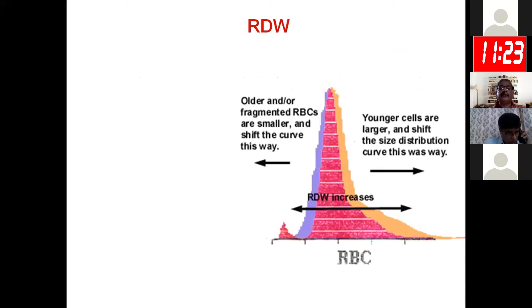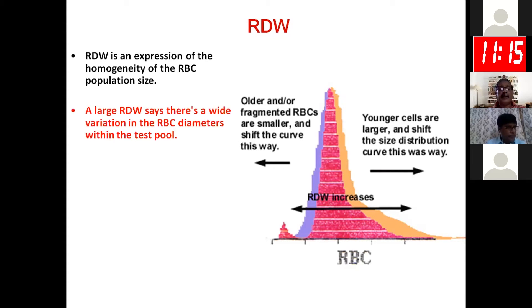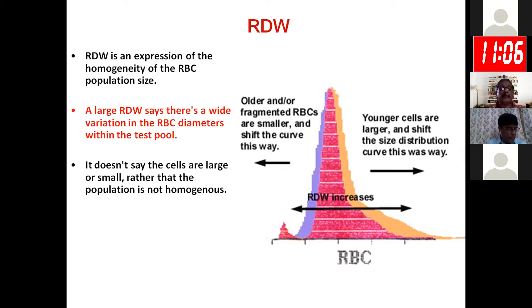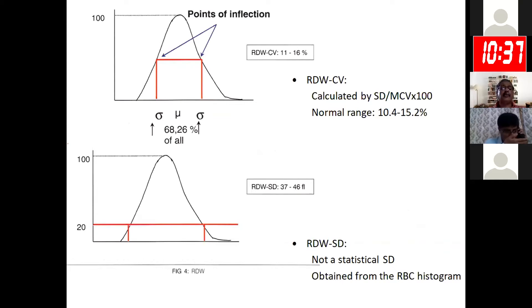RDW is simply an expression of the homogeneity of the RBC population. A large RDW means there is a wide variation in RBC diameters within the test pool — it does not say cells are large or small, only whether the population is homogeneous or heterogeneous. Younger reticulocytes are larger and shift the histogram to the right; older, smaller cells add to the left. RDW-CV is approximately the width of the histogram at 68 percent above the baseline, whereas RDW-SD is the width at 20 percent above the baseline.